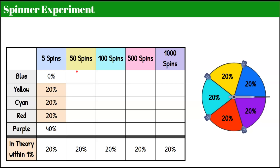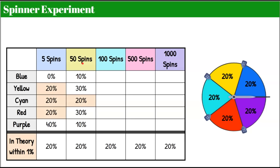Now let's conduct the experiment 50 times. I went to the website and had it spin the spinner 50 times. When we spun 50 times, it landed on blue 10%, yellow 30%, cyan 20%, red 30%, and purple 10%. In theory, our theoretical probability hasn't changed — it should land on each color 20% of the time. After 50 spins, only one of the colors came out exactly at 20%.